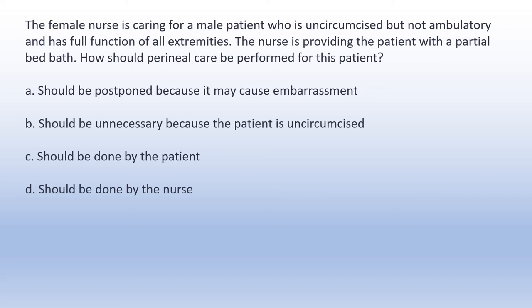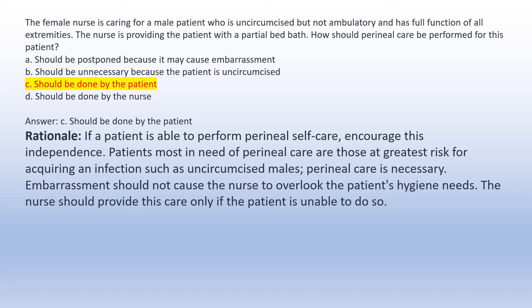The female nurse is caring for a male patient who is uncircumcised but not ambulatory and has full function of all extremities. The nurse is providing a partial bed bath. How should perineal care be performed? A. Should be postponed because it may cause embarrassment. B. Should be unnecessary because the patient is uncircumcised. C. Should be done by the patient. D. Should be done by the nurse. Answer C: Should be done by the patient. Rationale: If a patient is able to perform perineal self-care, encourage this independence. Uncircumcised males are among those at greatest risk for acquiring an infection, so perineal care is necessary. Embarrassment should not cause the nurse to overlook hygiene needs.